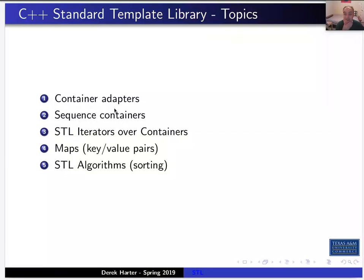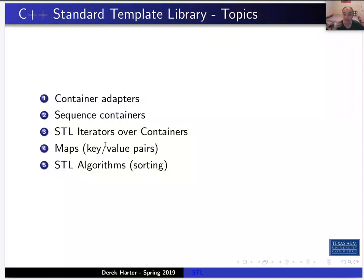I'm going to look at stacks, queues, and priority queues in the standard template library. We'll also look at maps, which implement key-value pairs — another name for dictionaries or hash tables. We'll look at iterators, and then real quickly, I wanted to look at algorithms. The standard template library isn't just data structures; it also contains algorithms. We'll look at the sorting algorithm specifically.